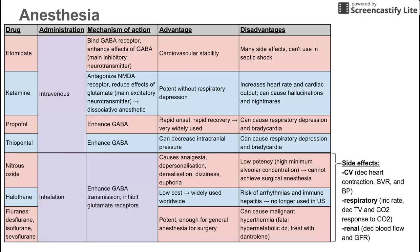Next is thiopental, which also has the same mechanism of action as propofol and etomidate — it enhances GABA. The advantage here is that it can decrease intracranial pressure, which can be particularly attractive for neuro patients to reduce the pressure in the skull. One disadvantage is that it can cause respiratory depression and bradycardia, just like propofol. Thiopental is also one of the drugs used in lethal injections.